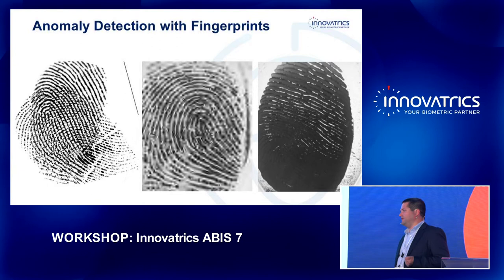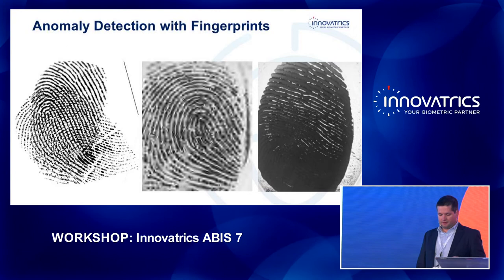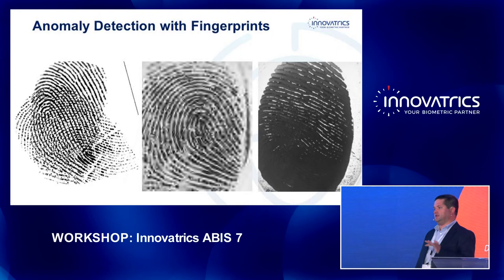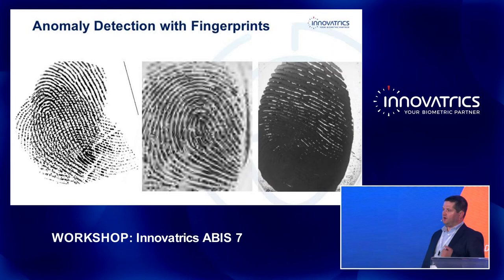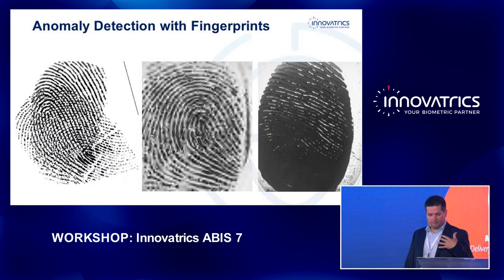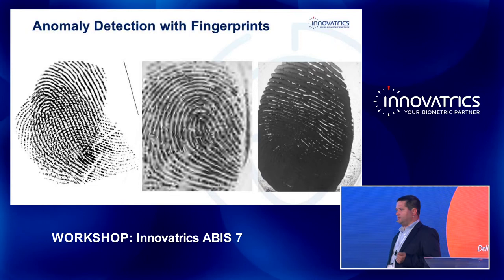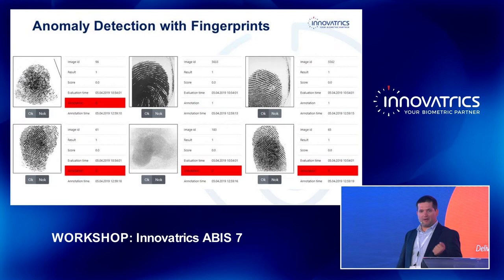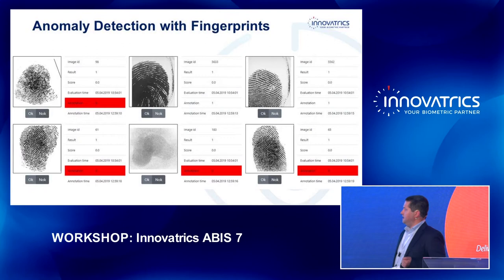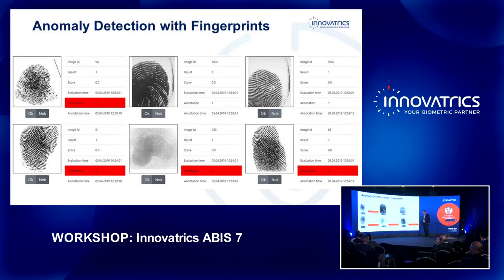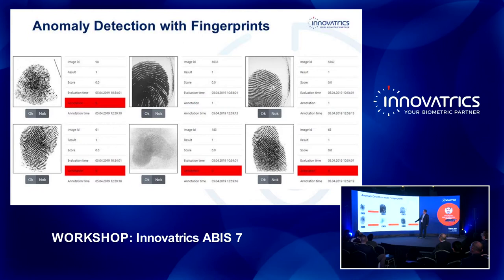We have developed a special tool that will allow you to reveal such cases. Unlike the placement tool, we didn't train the system on a specific use case like incorrect placement — instead we have a tool able to identify anomalies automatically. You just process the fingerprints using our tool, and the system automatically detects anomalous cases. With the assistance of an operator, we are able to flag those that are interesting.